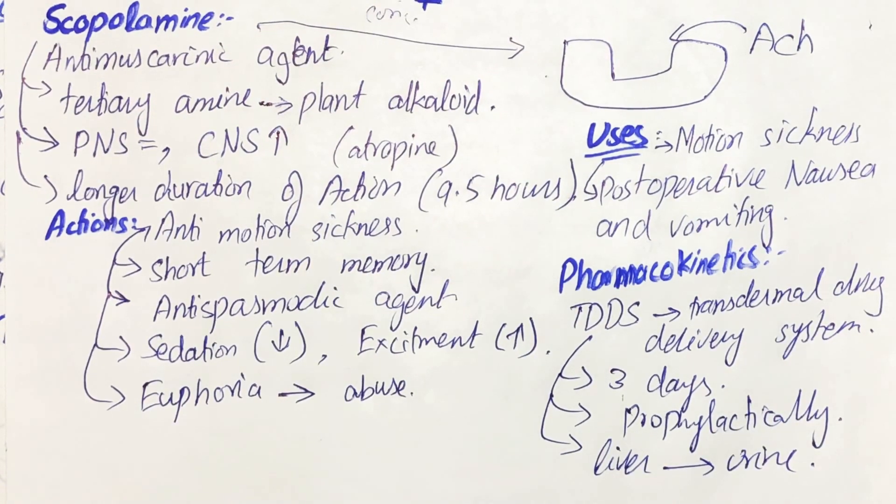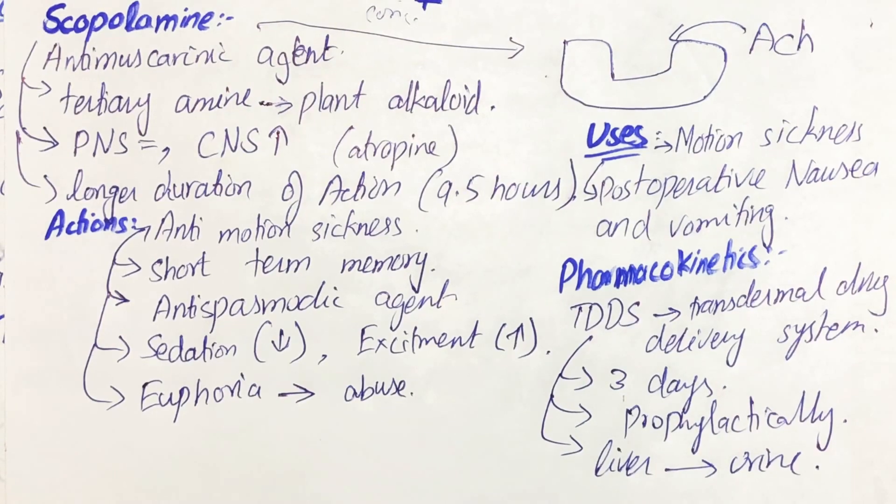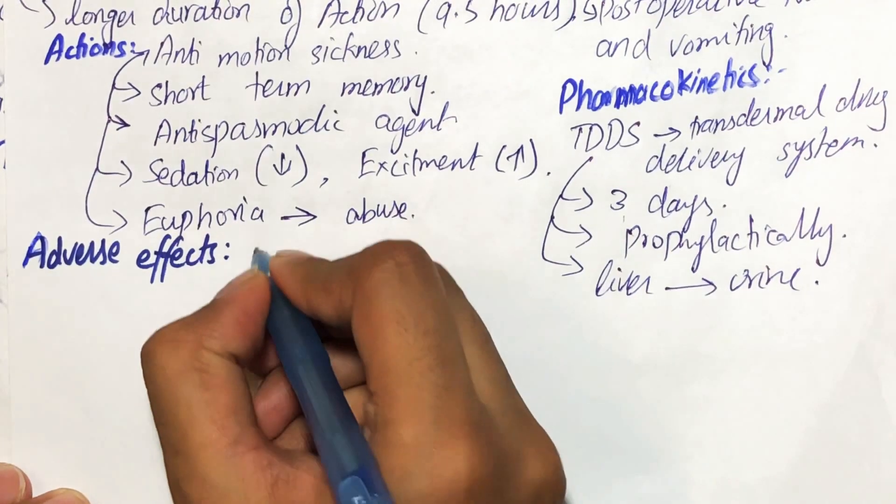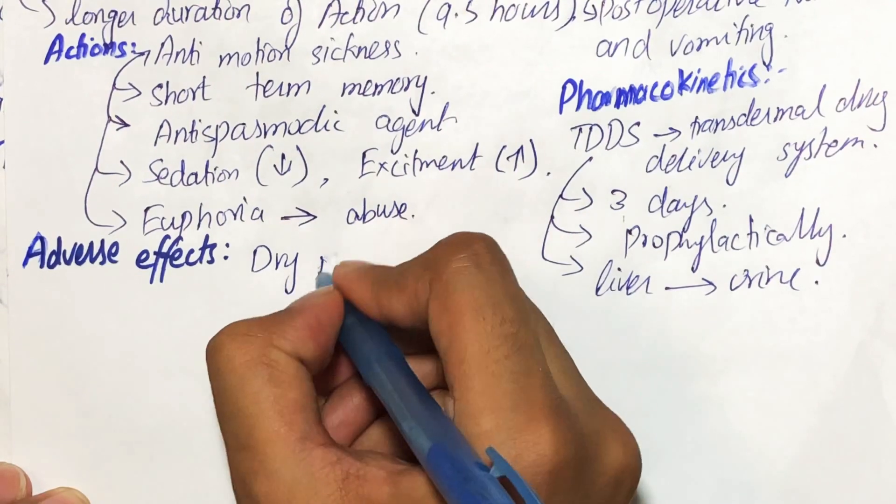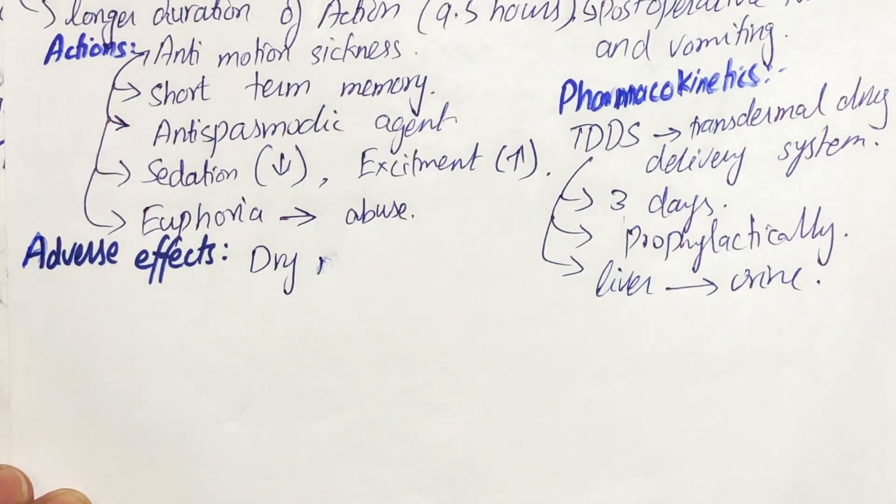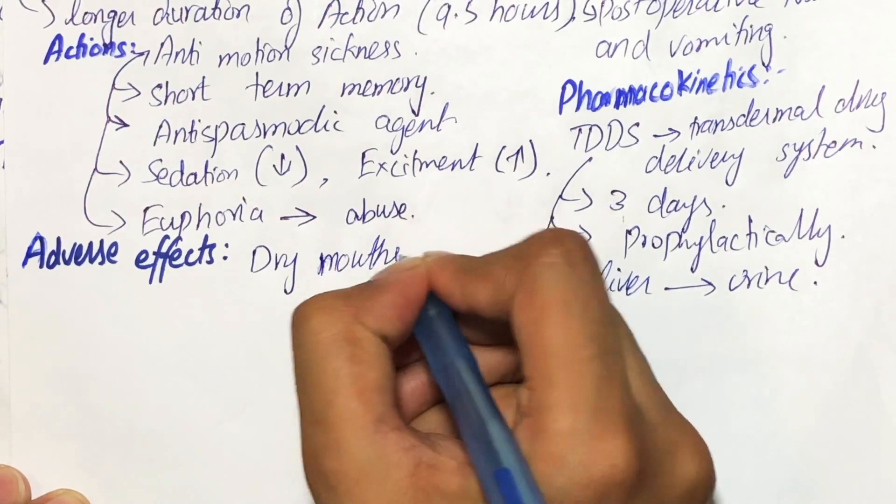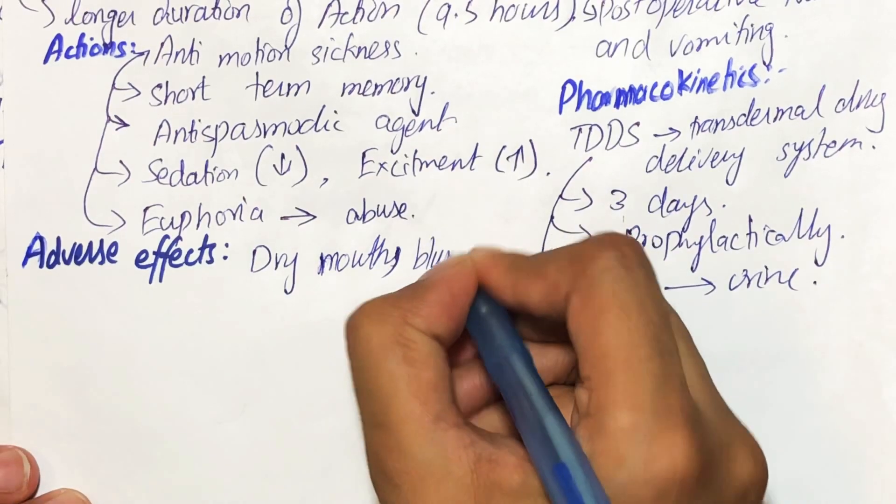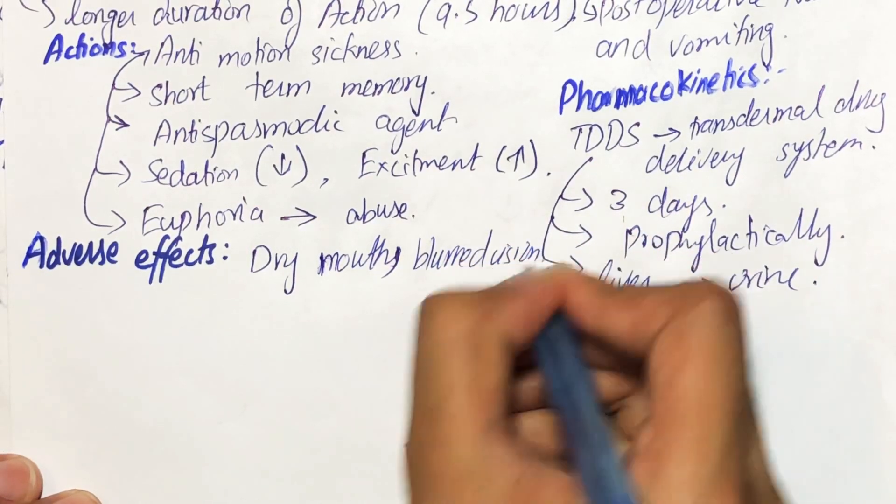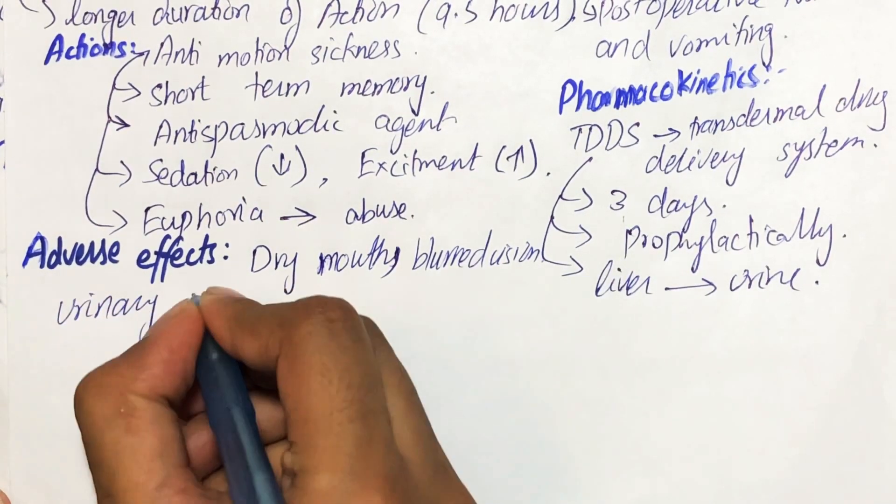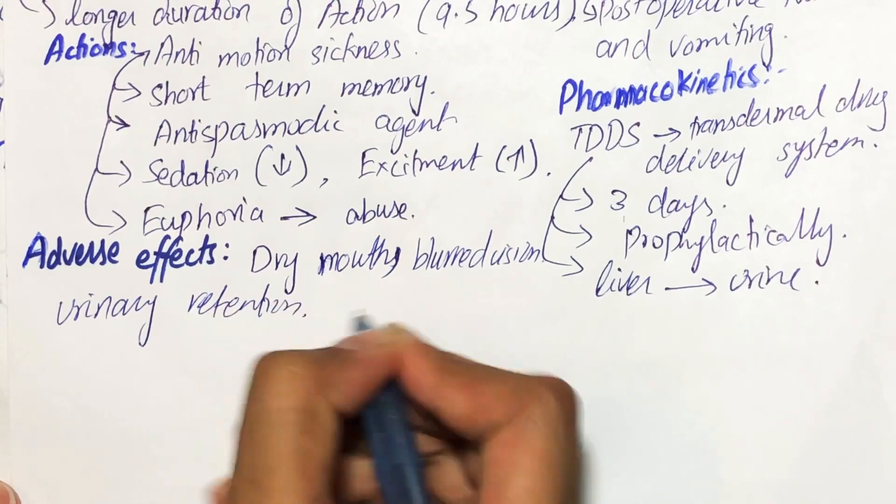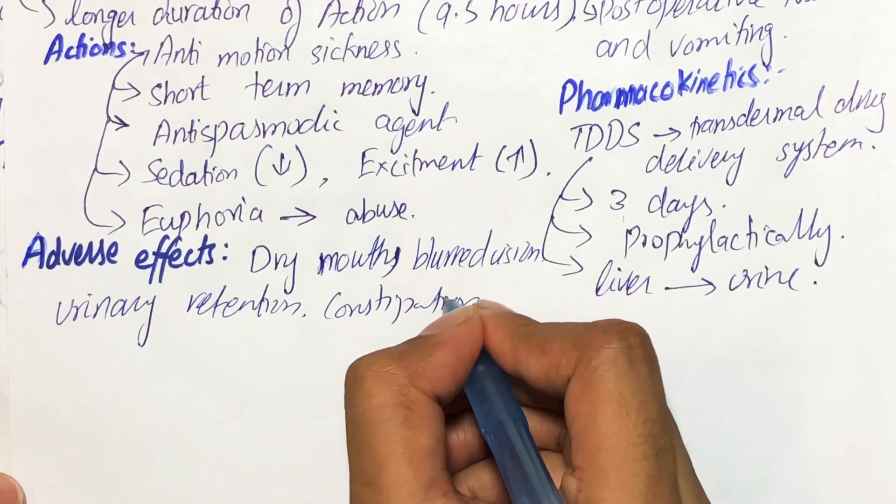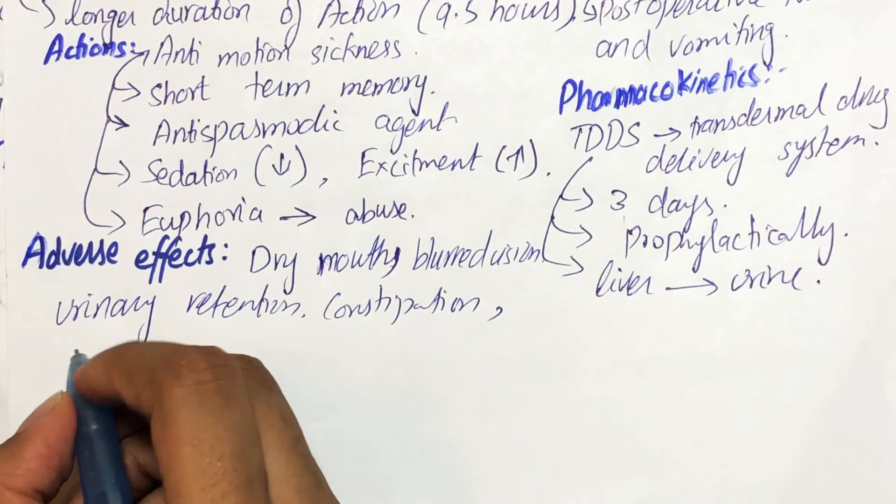Adverse effects of scopolamine are much similar to that of atropine, which are dry mouth, because it also causes decrease in the body secretions. It also causes blurred vision, it can cause urinary retention, constipation, and mydriasis.